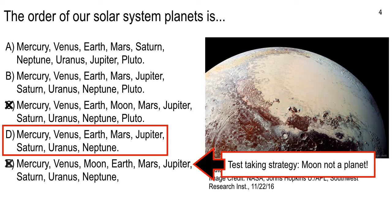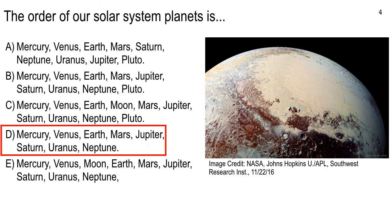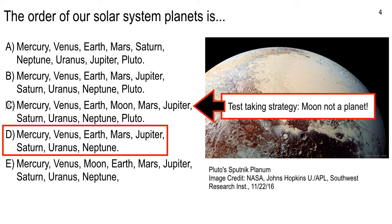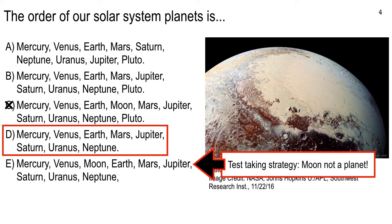Similarly, E is out because it has moon on the list as well. So you got to read carefully and think. And if you can, as always, if you can eliminate one or two and then make a guess on the remaining ones, that will help you out with your exam performance.